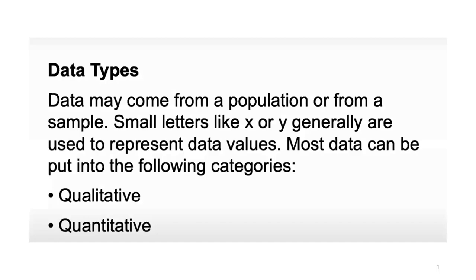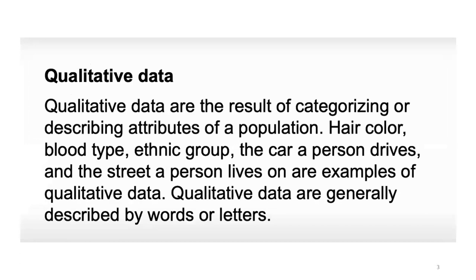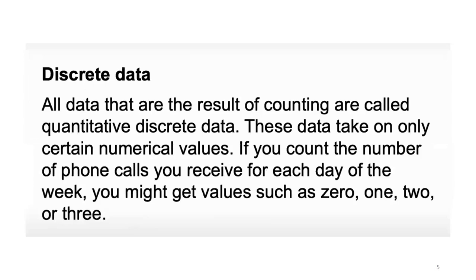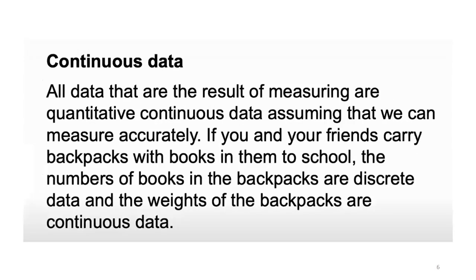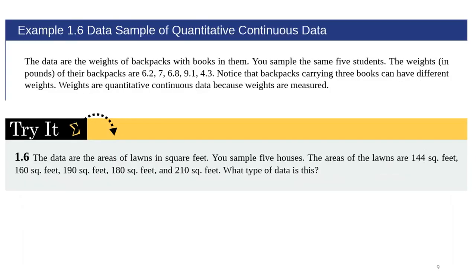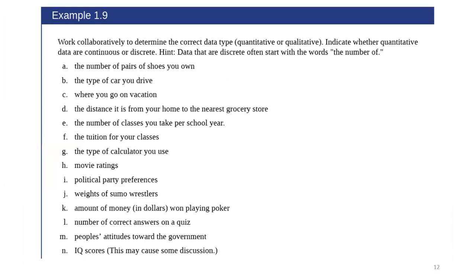Then we discussed the basic terms of data types: what is qualitative data and what is quantitative data. Qualitative and quantitative data each have two different types. What is discrete data, what is continuous data — examples were given to you and you understood various examples well, including how to differentiate these types from given examples.